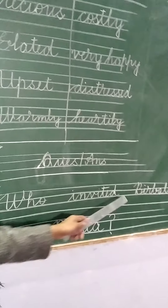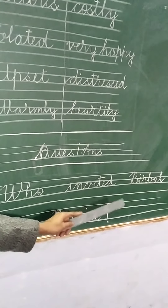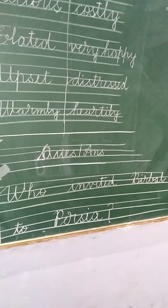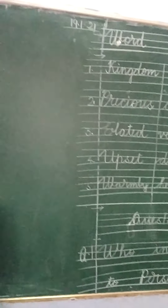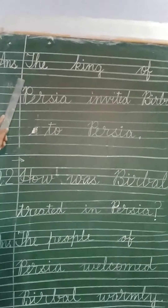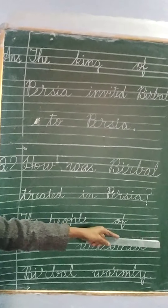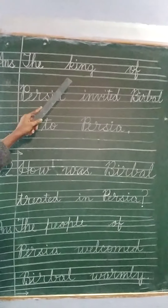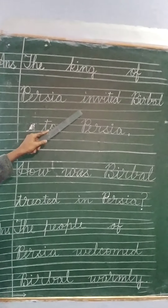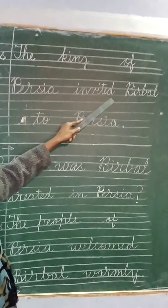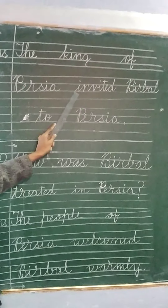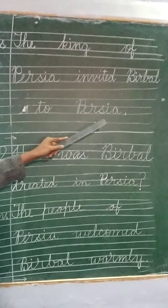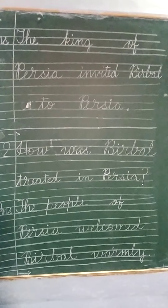Question number 1: Who invited Birbal to Persia? Put the question mark. So, the answer is: the king of Persia invited Birbal to Persia. You have to write the king of Persia invited Birbal to Persia. Put the full stop.